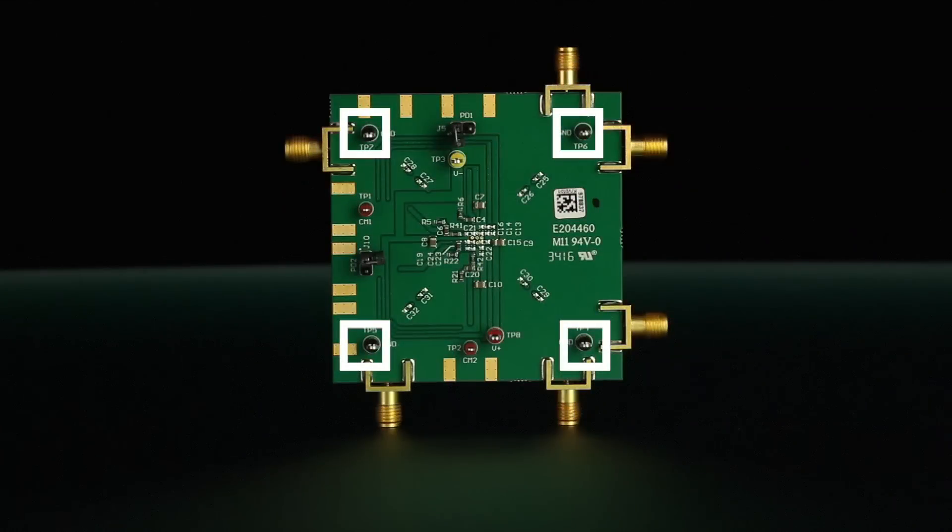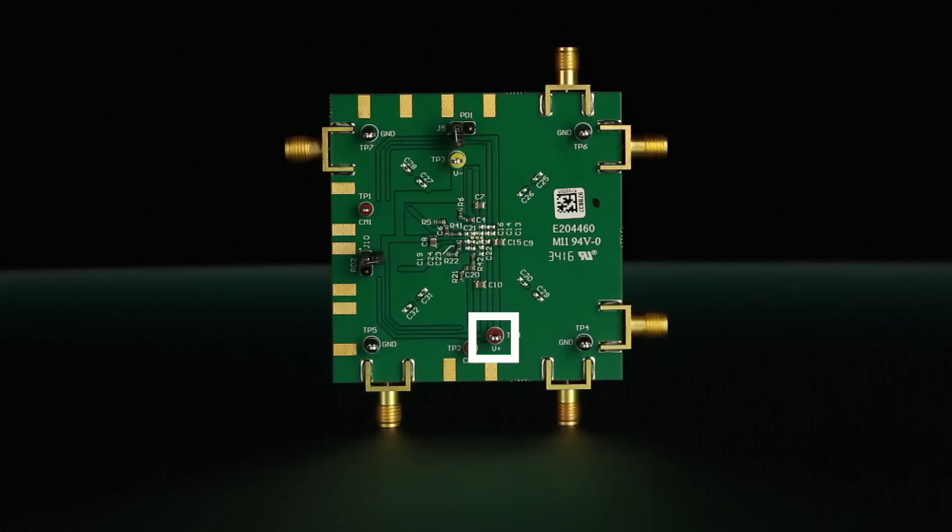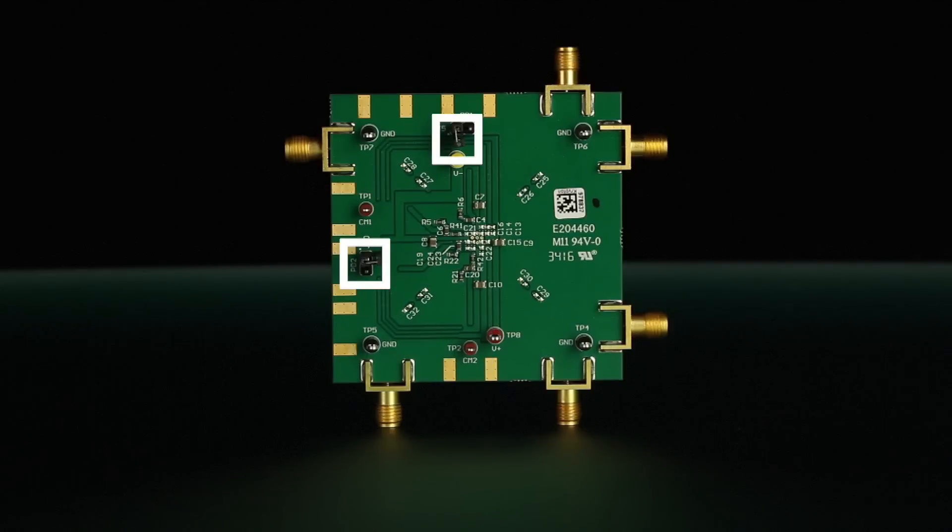The bottom side of the board features four black ground connectors or test points, a red connector for the VS positive amplifier supply, a yellow connector for the VS negative amplifier supply, two red connectors for the VOCM amplifier common mode voltage inputs, and two power down control jumpers.